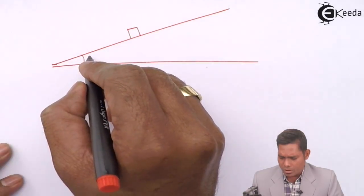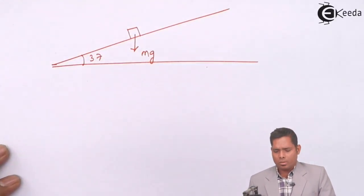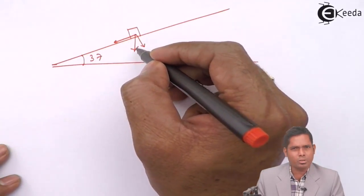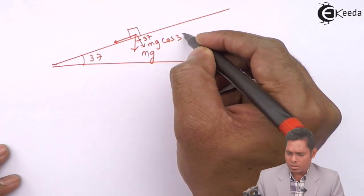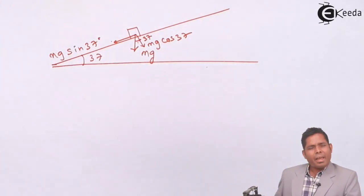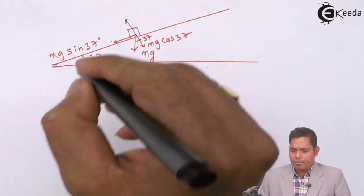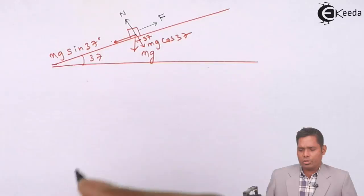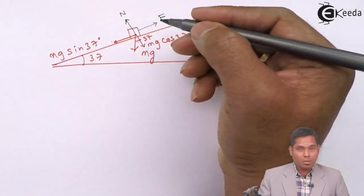The block is placed here, and this angle is 37 degrees. Weight is acting downward. This force has two components: Mg cos 37 in the normal direction and Mg sin 37 degrees along the plane. The normal force N acts in the opposite direction of Mg cos 37. I have applied an external force F, and friction will be acting up or down depending on the situation.